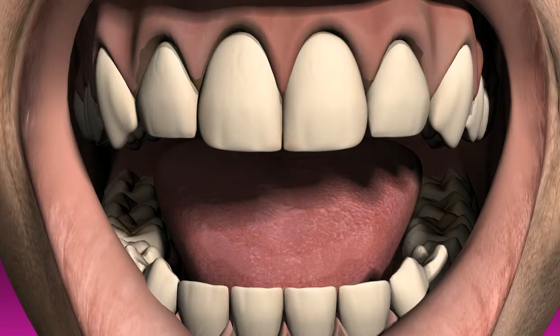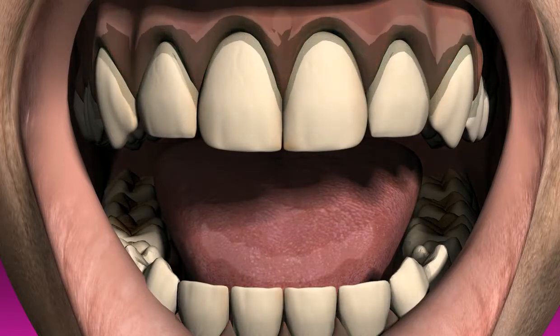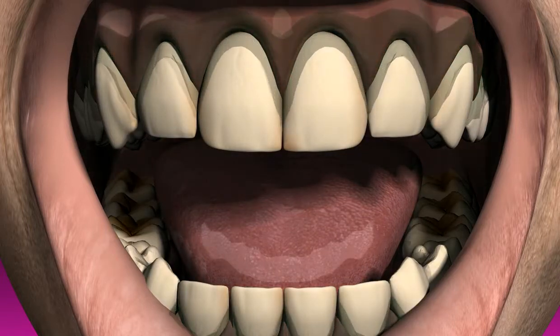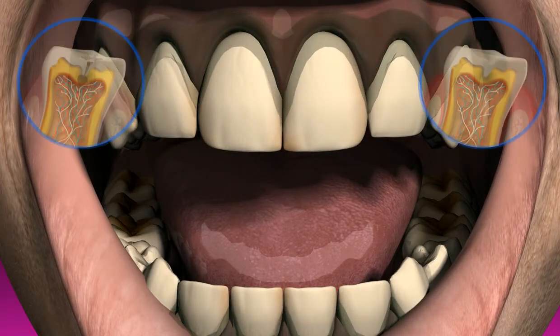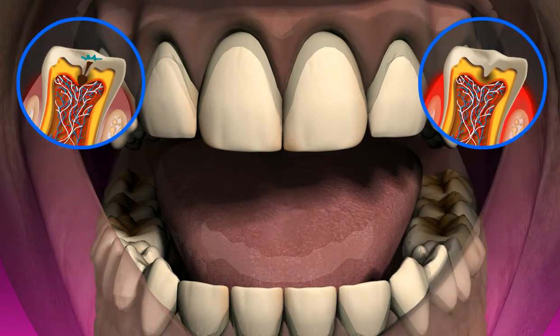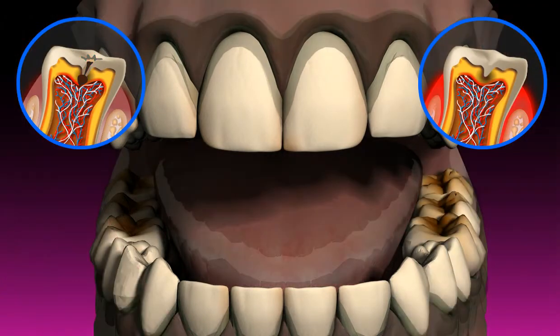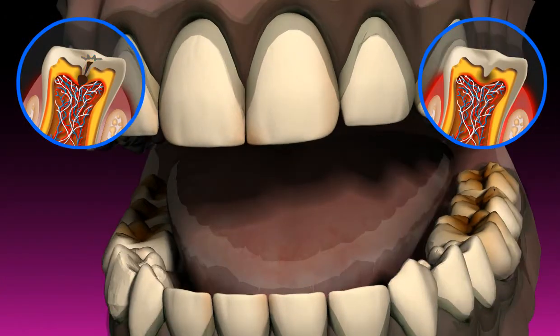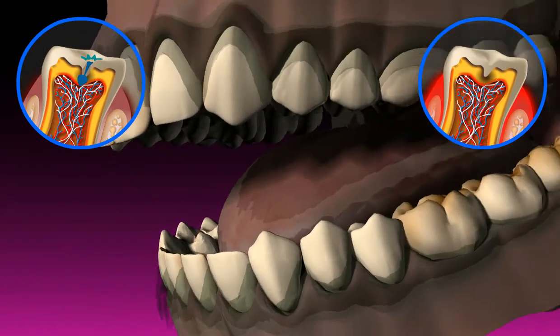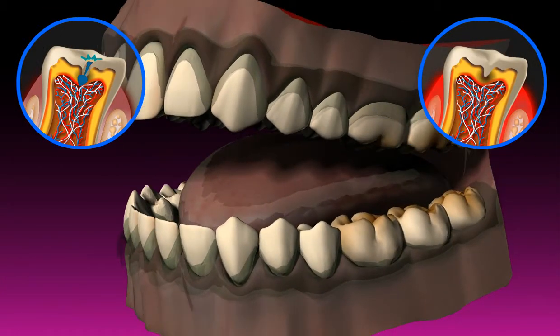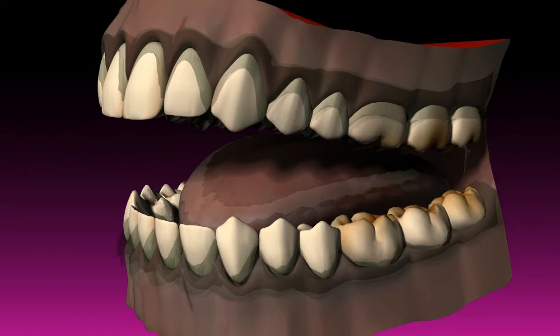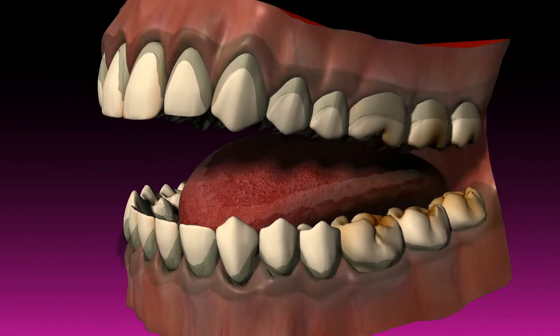Plaque is the term used for tooth deposits. Plaque causes caries and periodontitis. Plaque is a biofilm that is formed by bacteria on the teeth, resulting from saliva and food scraps.